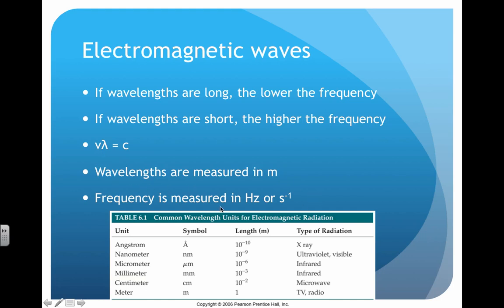Frequency is usually measured in hertz, or seconds to the minus one — they're the same thing. You might remember hertz from phone frequencies, or processors on computers described in gigahertz and megahertz. There's also a table of common units used for wavelength. These are all units you've learned before and should still be familiar with. Don't worry about memorizing the type of radiation associated with each unit.